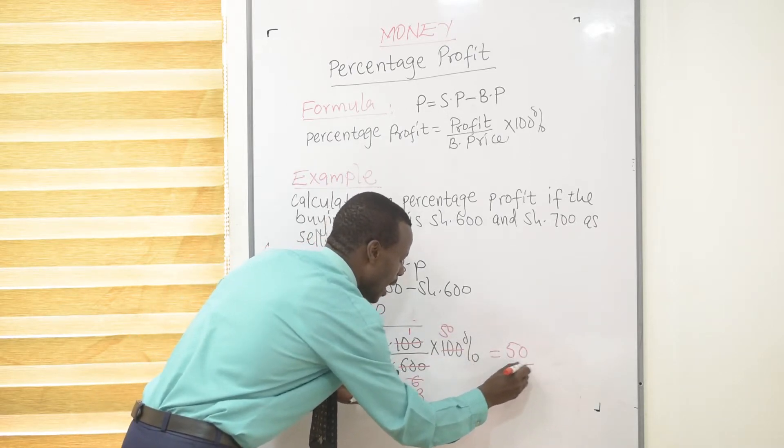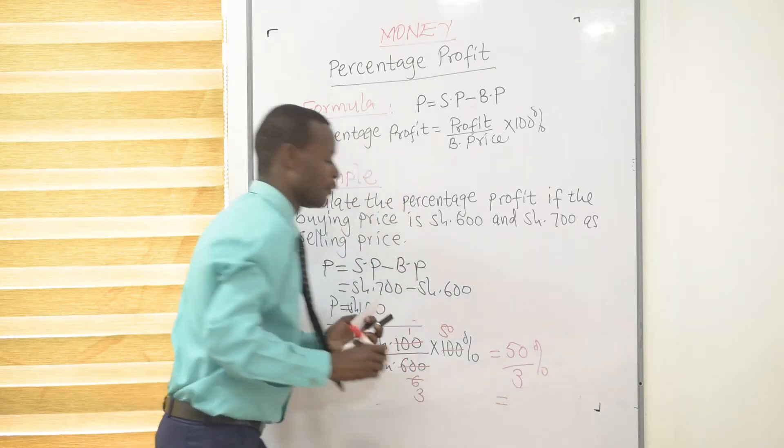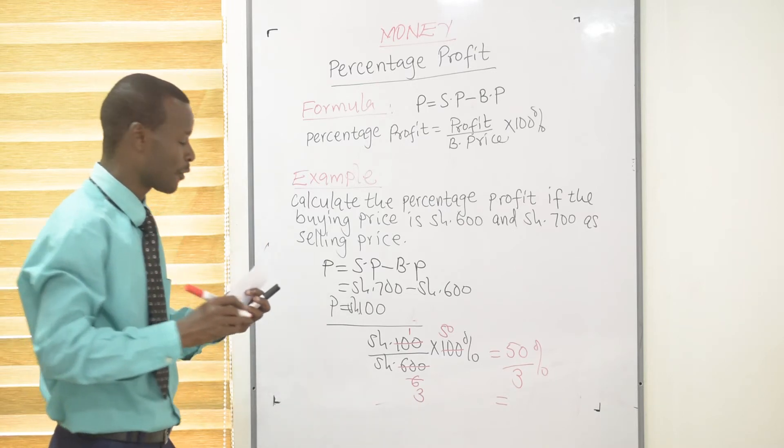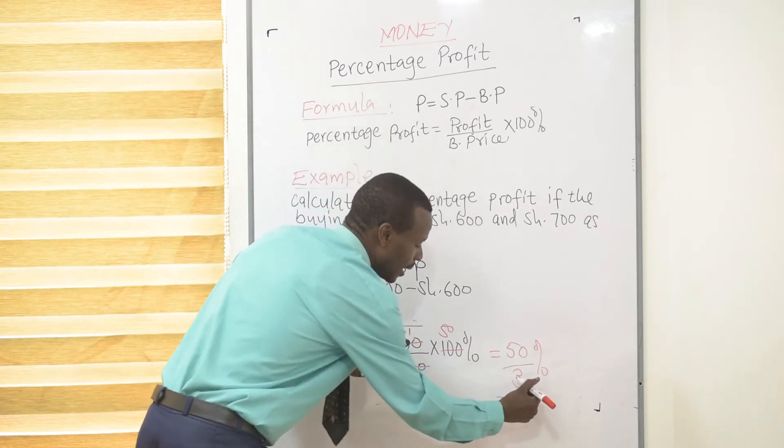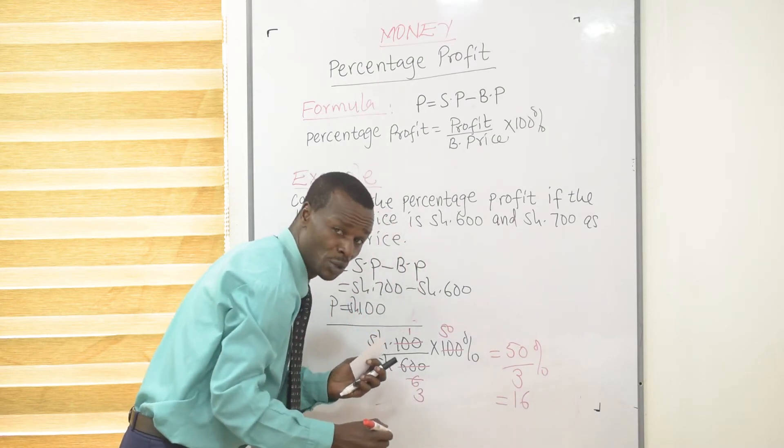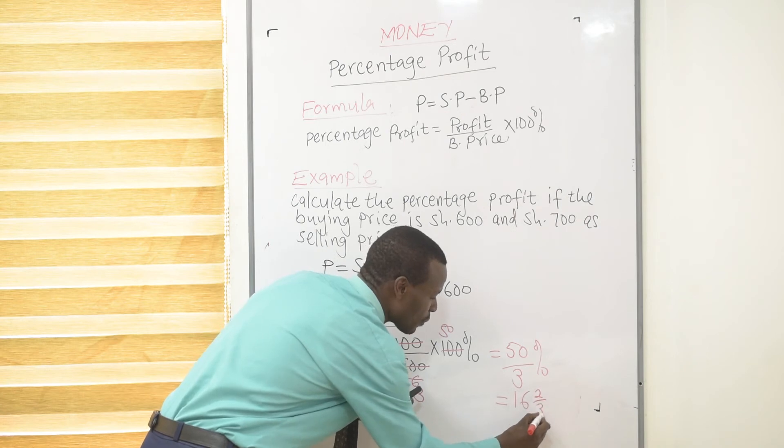we have 50 out of 3%. If you divide that or change that into a mixed fraction, you will get that 3 divides into 50 16 times, which will be 48, then you remain with 2 out of 3.